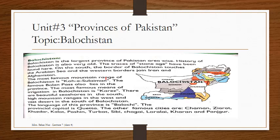The most famous mountainous range of Balochistan is Koh-i-Sulaiman. It is the highest mountainous range in the frontier region.